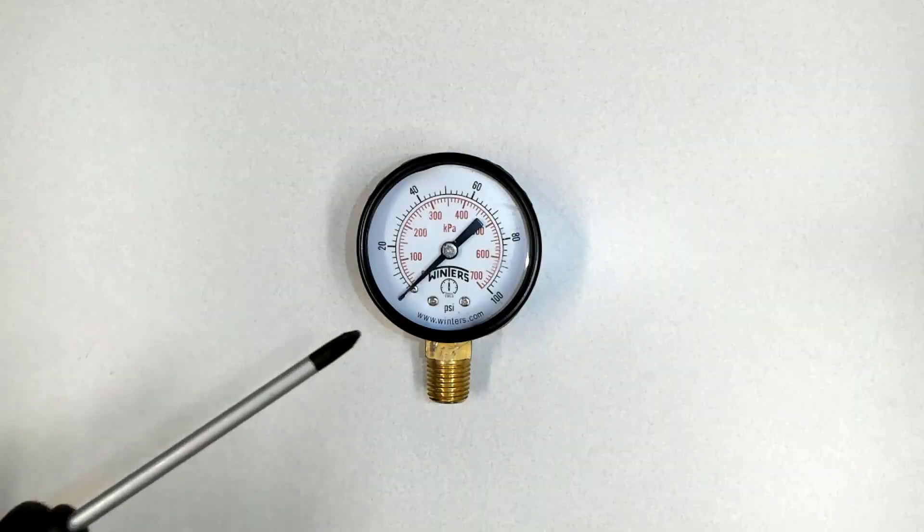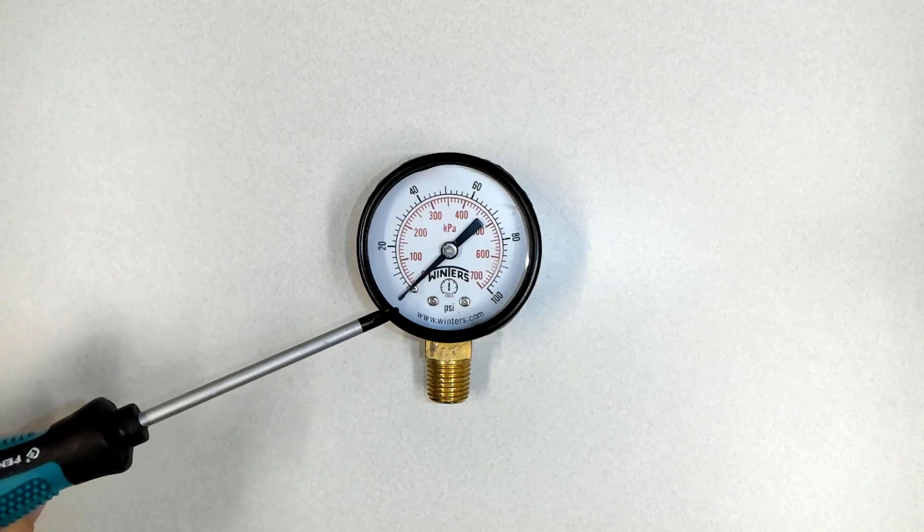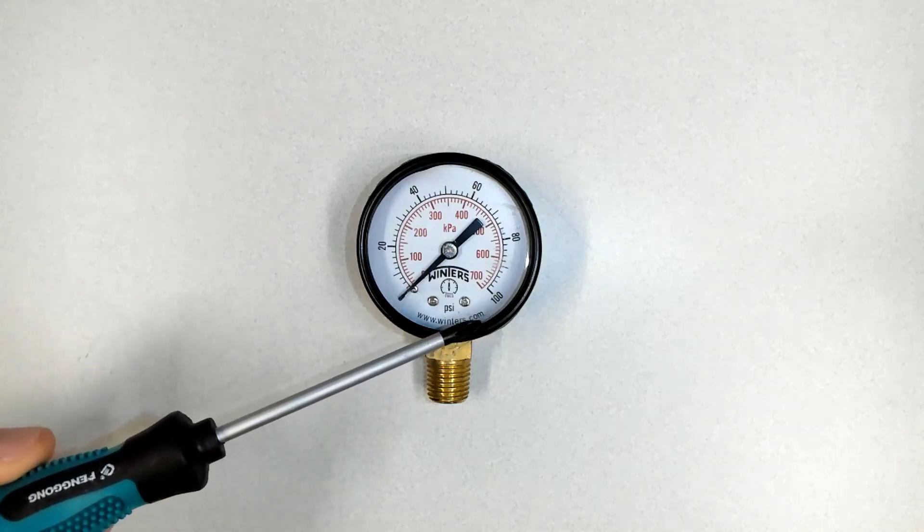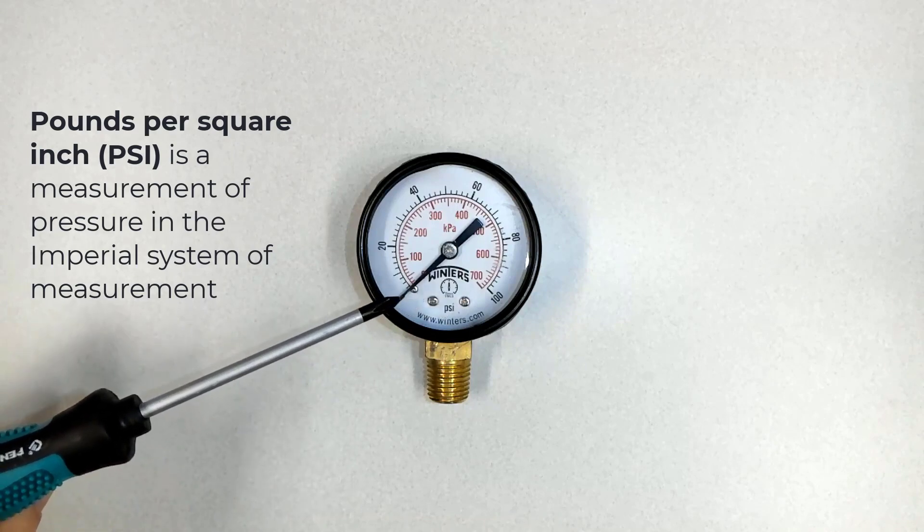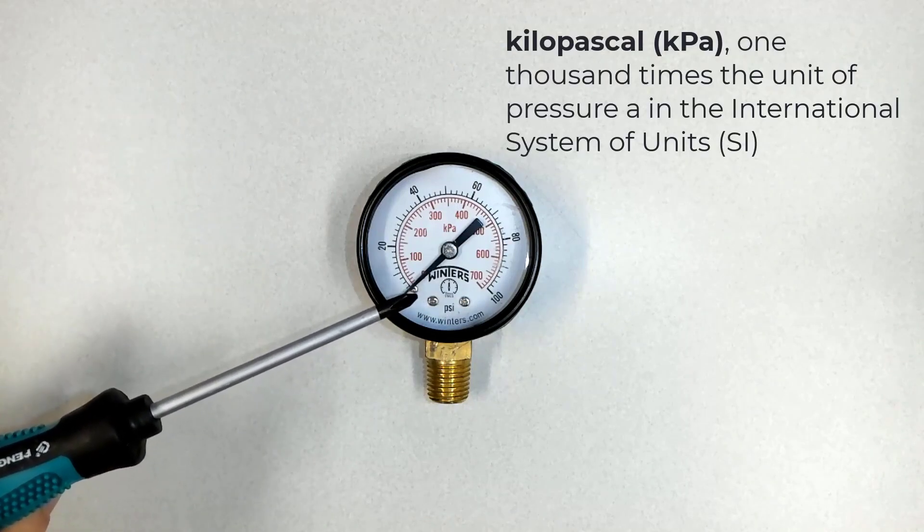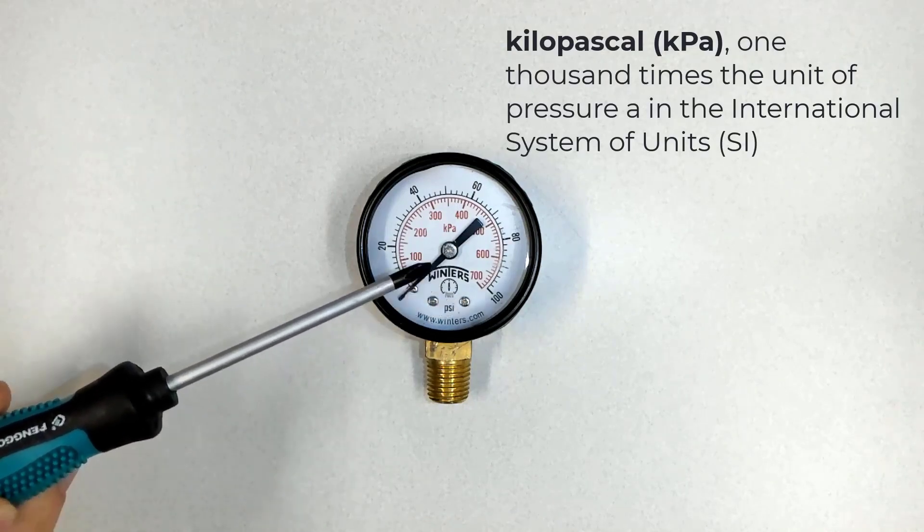this pressure gauge measures pressure from 0 to 100 psi, and psi is the unit for the black marks. The red marks go from 0 to 700 kilopascal.